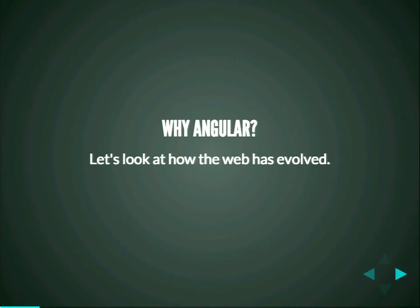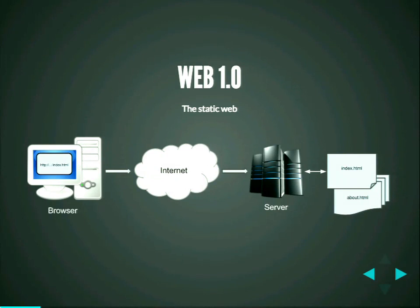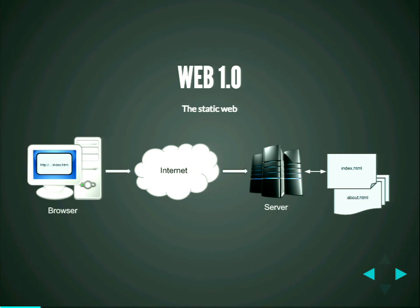To understand why AngularJS is so important to Drupal, let's take a step back and talk about how the web has evolved. It's important to understand how we are today relative to five years ago and why the way we build apps is so different. Let's take a trip through memory lane. Everyone probably remembers Web 1.0 — the static web, where a user would type a URL, it would hit a server, and receive a static HTML file. Everyone thought it was wonderful — a brochure-oriented web ecosystem.